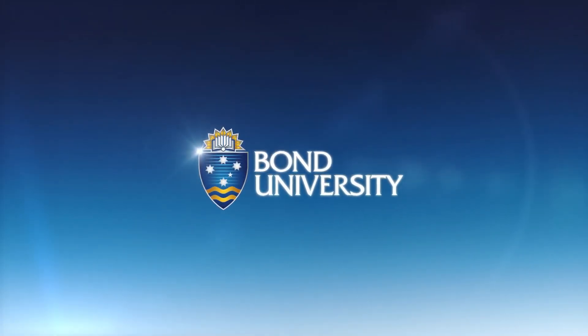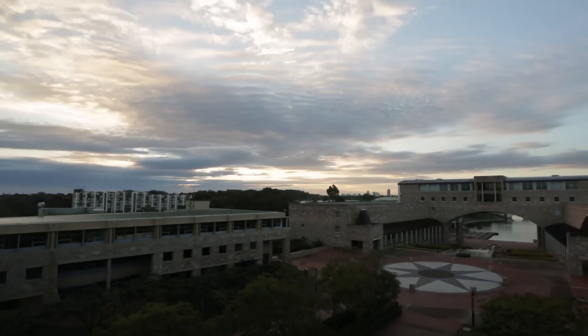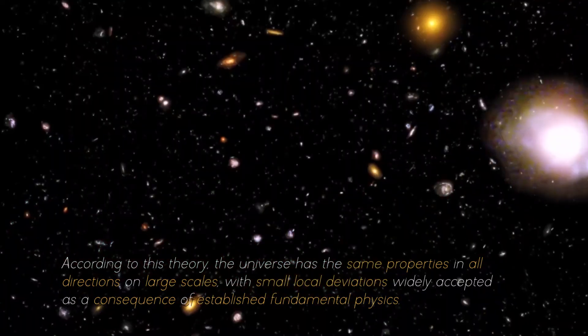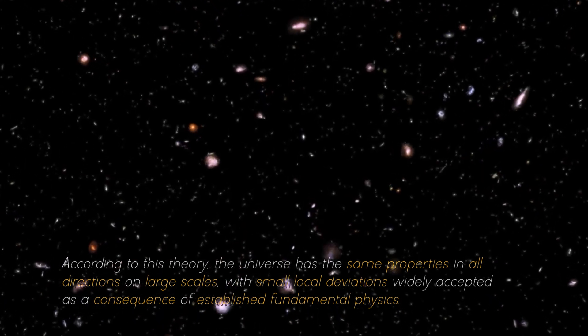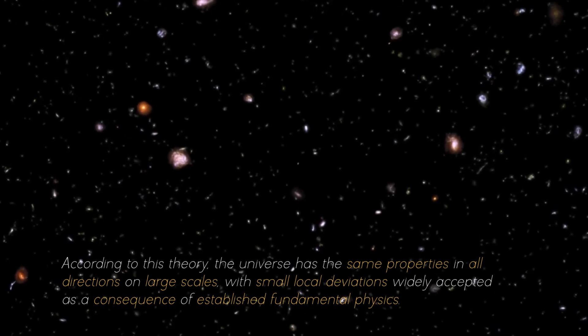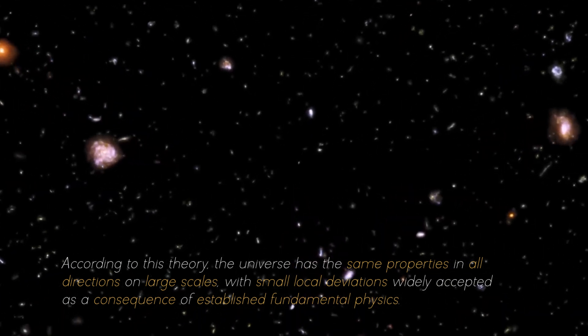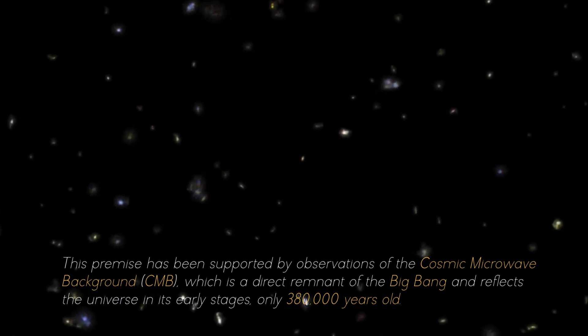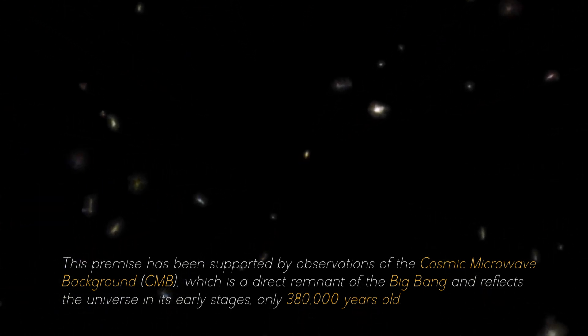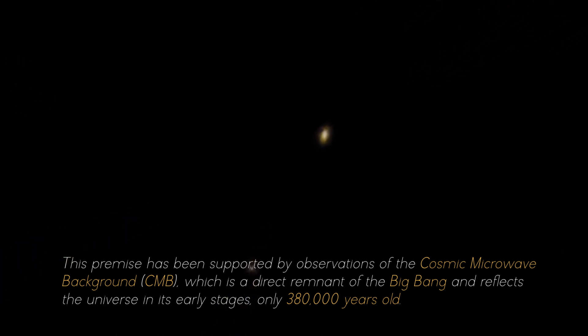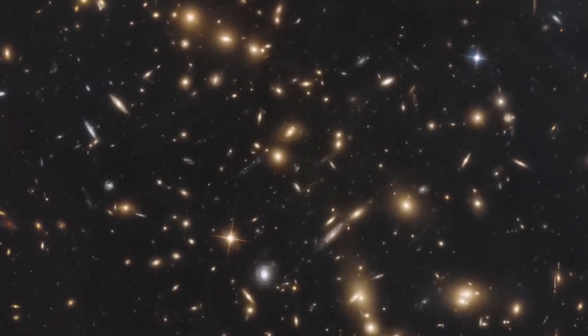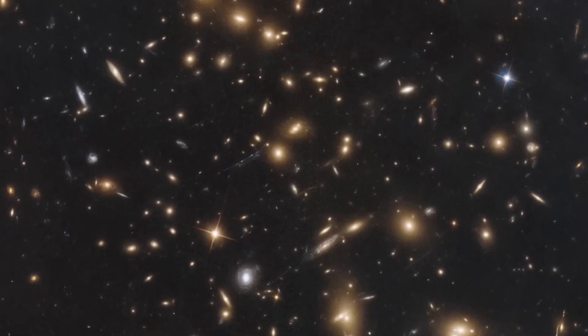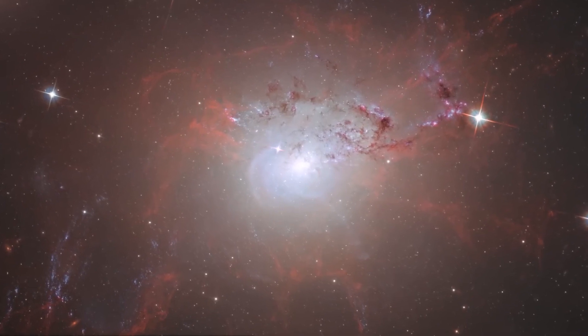A PhD researcher in astronomy and astrophysics at Bonn University, together with his supervisor, set out to investigate the theory of isotropy. According to this theory, the universe has the same properties in all directions on large scales, with small deviations widely accepted as a consequence of established fundamental physics. This premise has been supported by observations of the Cosmic Microwave Background, which is a direct remnant of the Big Bang and reflects the universe in its early stages, only 380,000 years old. The uniform distribution of the CMB across the sky implies that the universe expanded rapidly and uniformly in all directions in those early times.